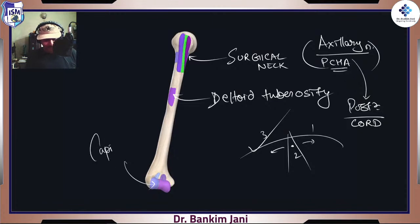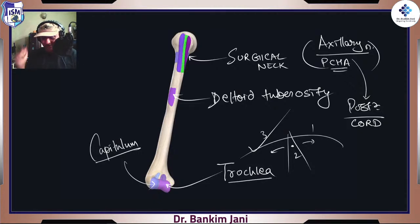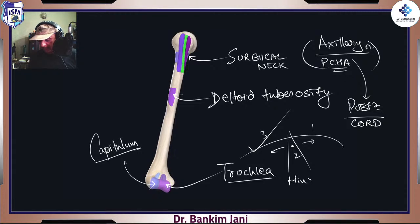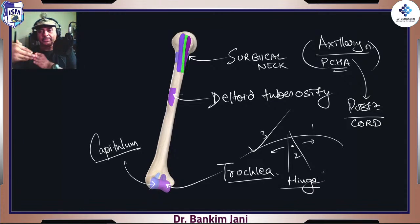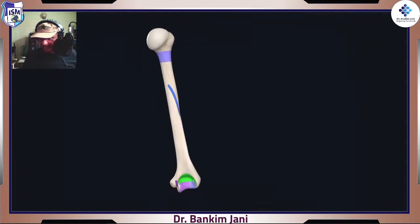Here are some cute names: it is capitulum — even just listening to this is so cute. And this one is also a very nice name — trochlea. Trochlea is like a pulley; it's a hinge joint. Just like your doors have a hinge so they move like this, here also it is a hinge joint. This much is sufficient for now. Greater tubercle, lesser tubercle, intertubercular sulcus — you are well aware of all these things.